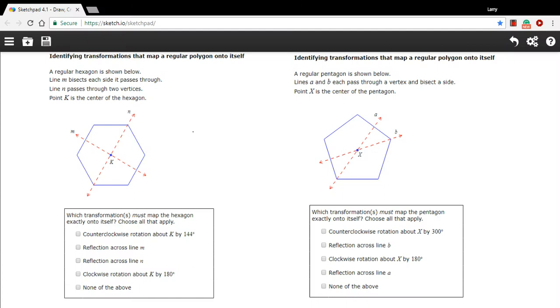In these problems we are trying to identify transformations that map a regular polygon onto itself, and that means after you do the reflection or the rotation the figure should look exactly the same. That's what being mapped onto itself means.